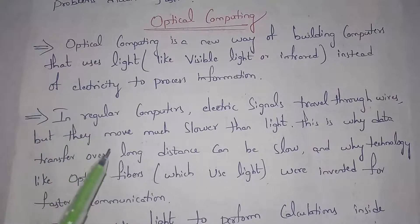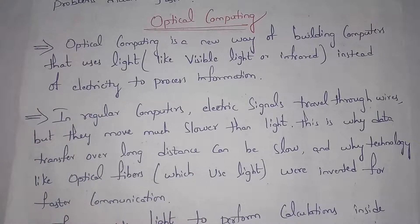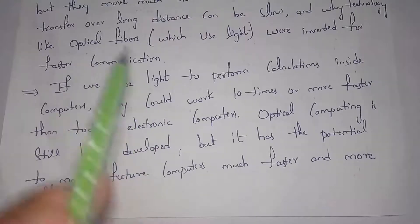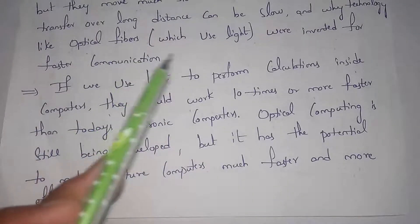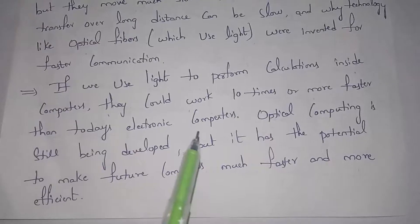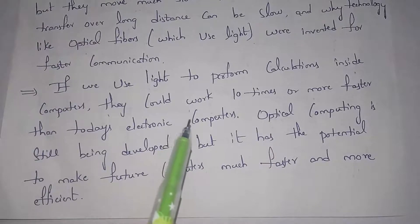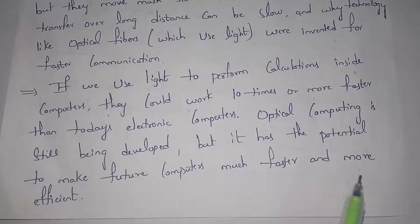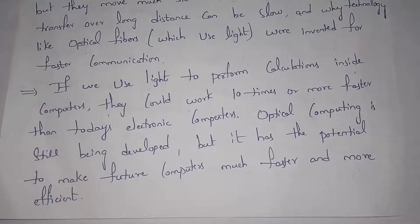In order to overcome this problem we need to use new technology like optical fibers. Instead of electricity, optical fibers use light in order to transfer information and they are mainly used for faster communication. If we use light in order to perform calculations inside a computer, they could work 10 times more faster than our present computers. Optical computing is not available at present — scientists are still developing it. In future if optical computing is implemented then our computers will work much faster than present.